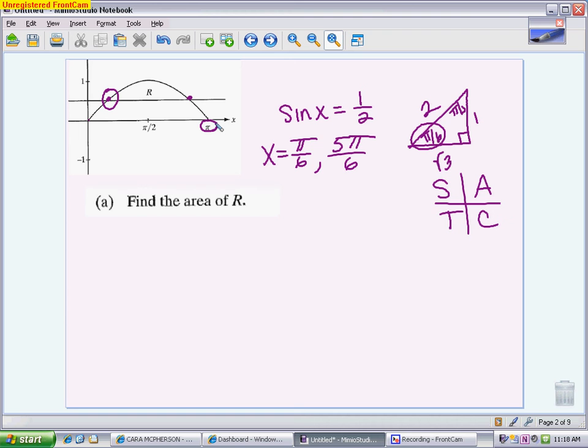For my area, my area is the integral from pi over 6 to 5 pi over 6. Top minus bottom, so it's going to be the sine of x minus a half. That's what the grader is going to be looking for when you set up your integral. You don't just want to write the answer of what you get after you integrate. You want to write your definite integral. Do you have the right boundaries? And do you have top minus bottom, the appropriate functions?